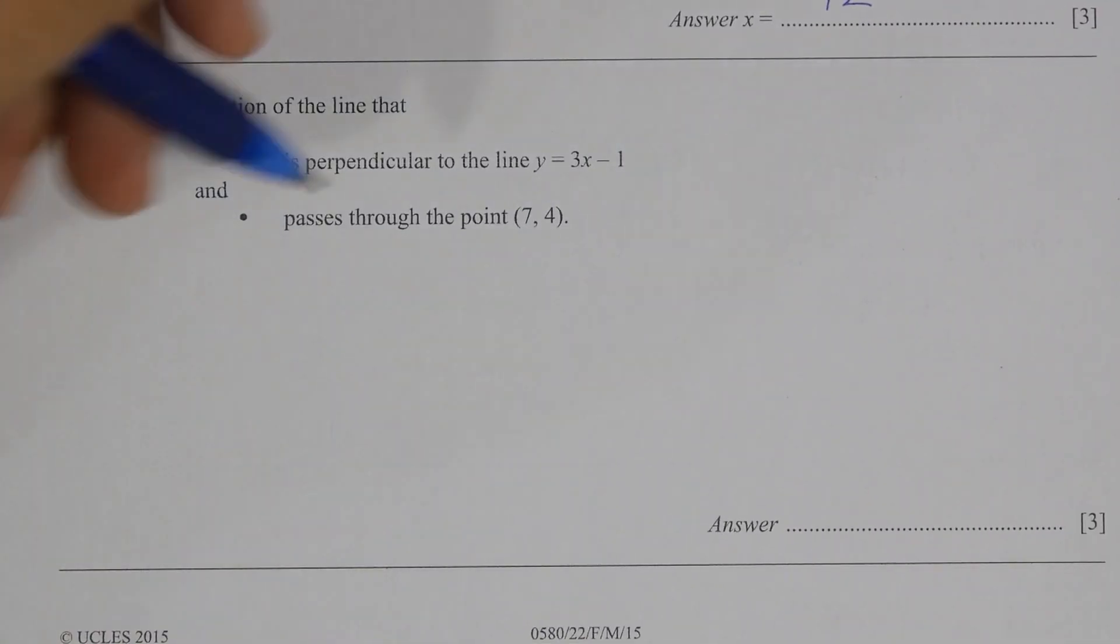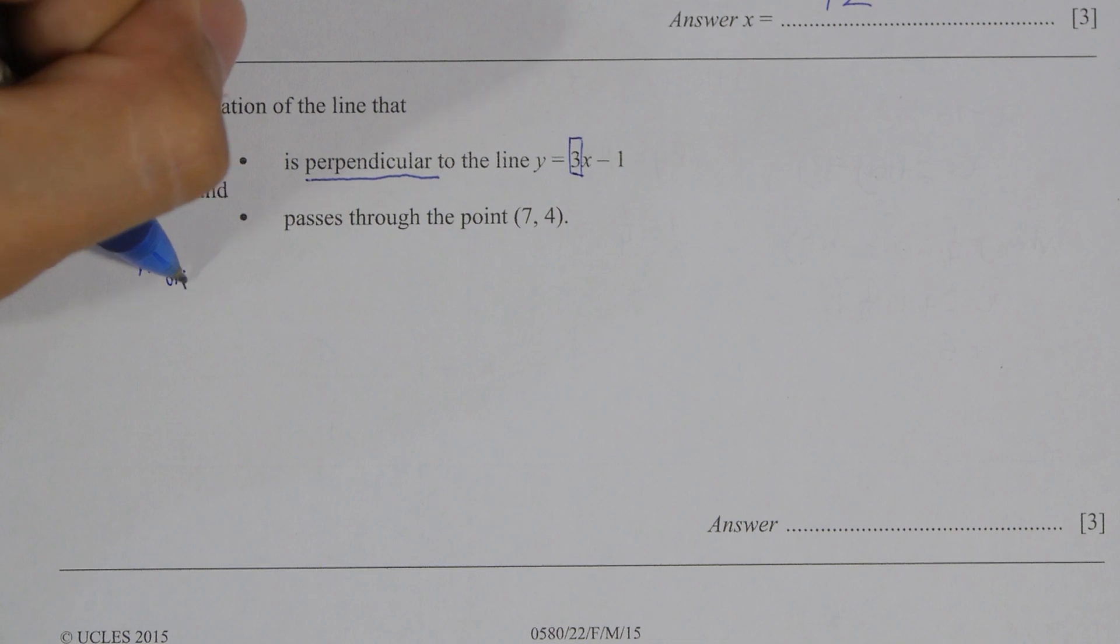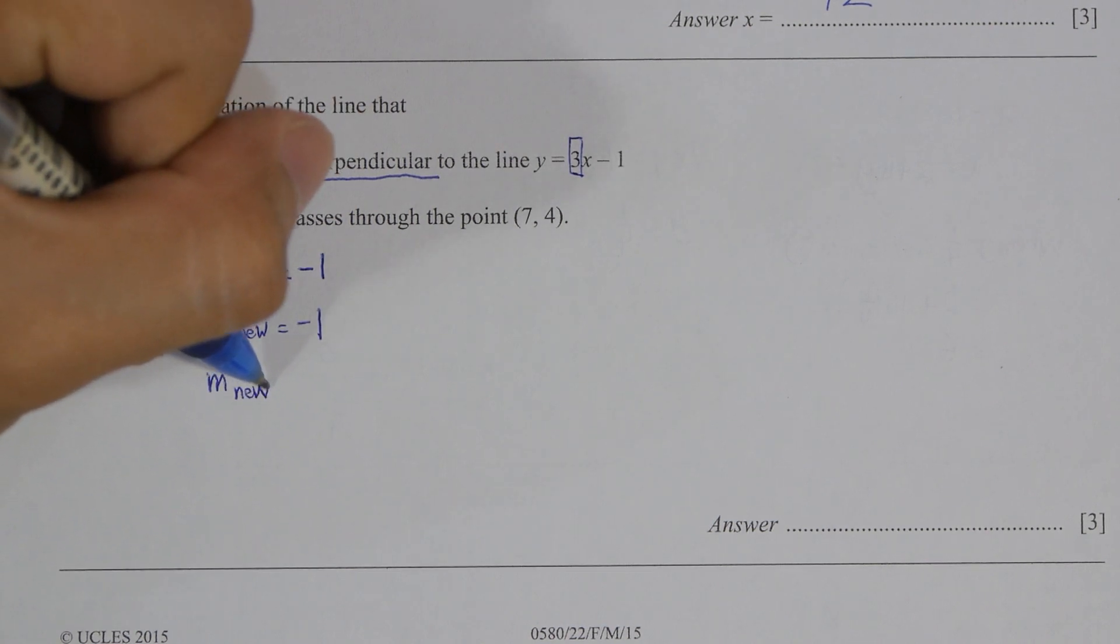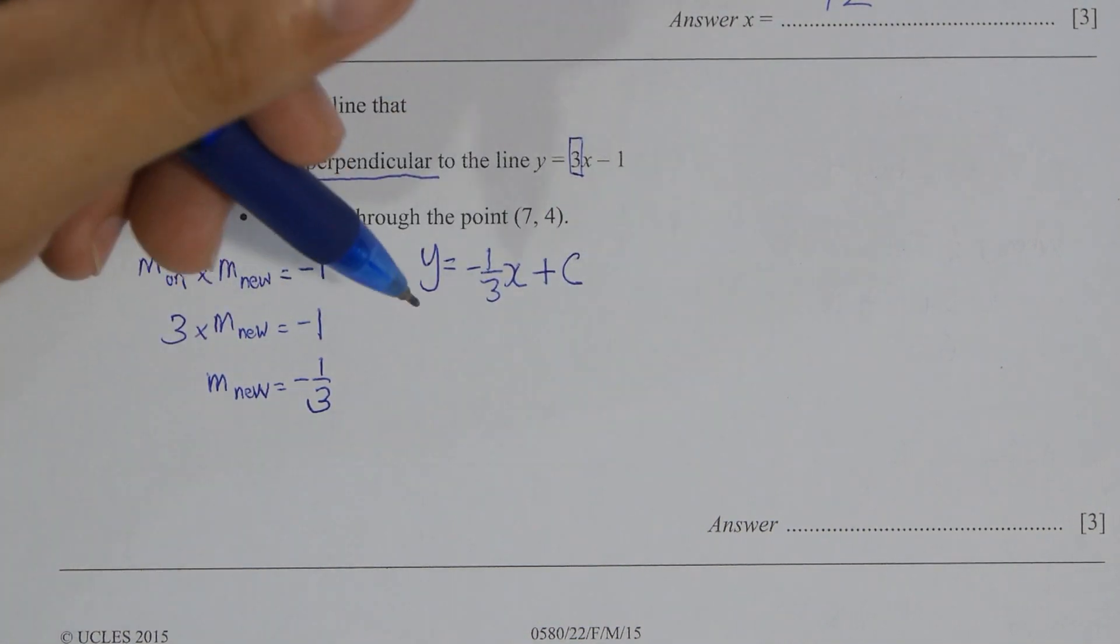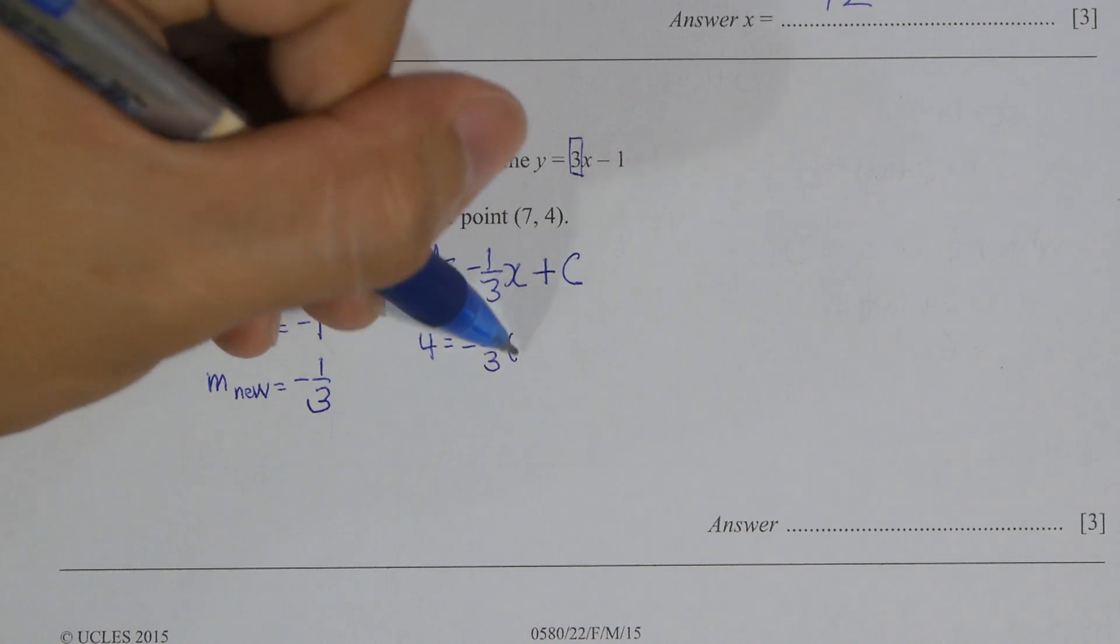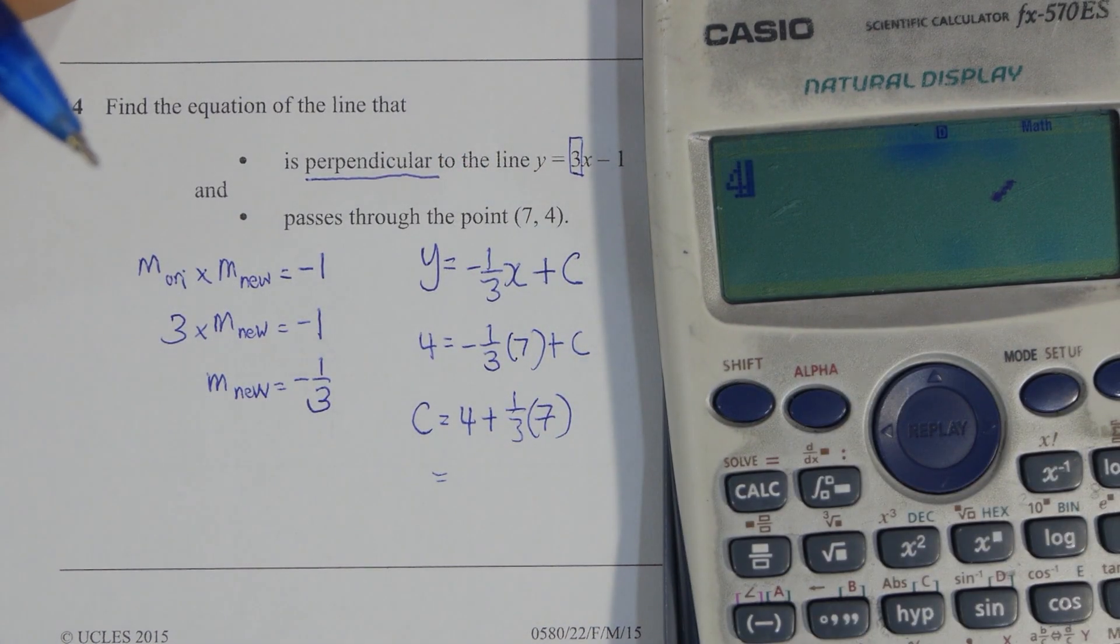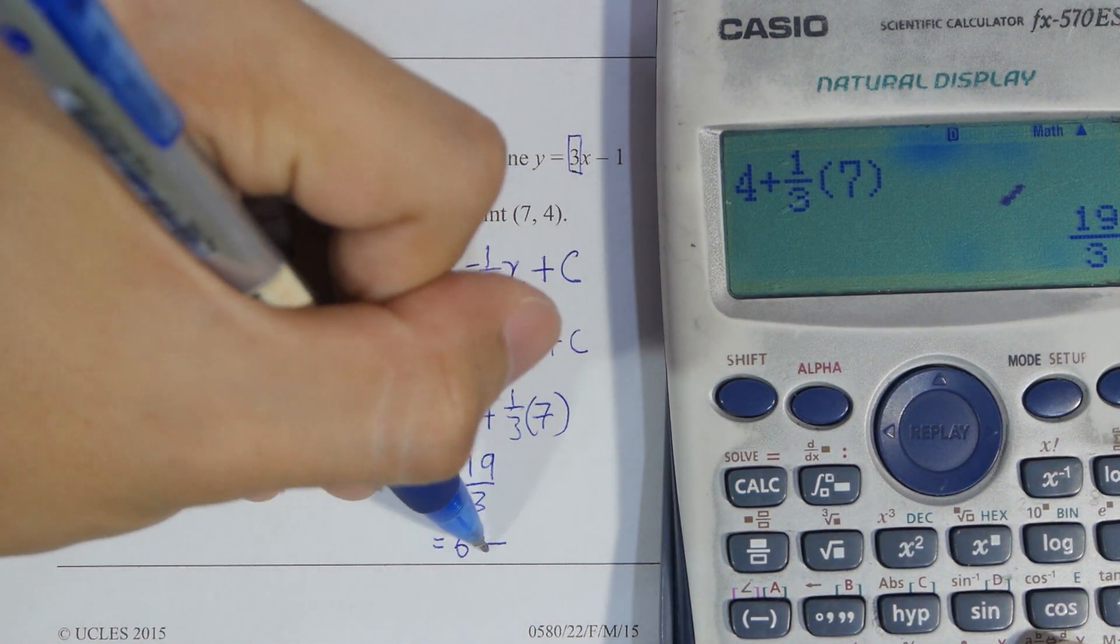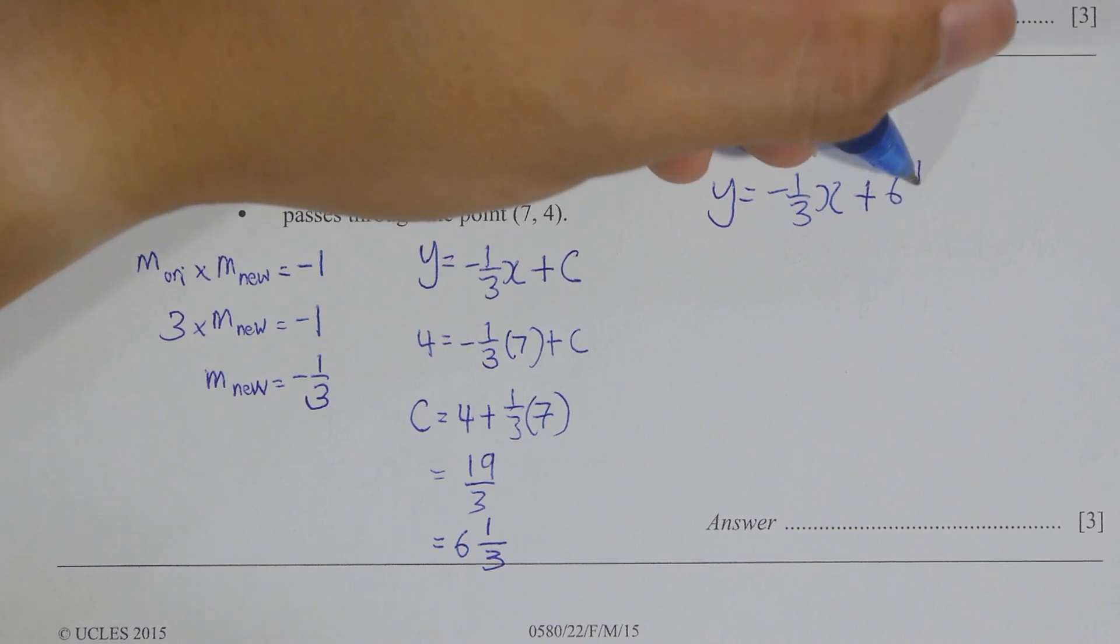Question 14, find equation of the line. y equals to three x minus one, this is the original line. Gradient of original times gradient of new line equals to negative one. Your gradient of the new line is actually negative one over three after the shifting. They gave you they pass through a point seven four, so substitute the value in to identify the c which in our case is six one over three. Change the denominator into the same then you will get three y equals to negative x plus six. So three y plus x equals to six is the equation.